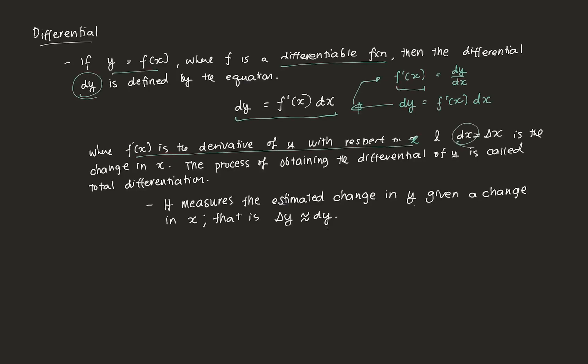Then dx is the change in x. The process of obtaining the differential of y is called total differentiation. The differential measures the estimated change in y — note, estimated — given a change in x, which is something incredibly important in economics. That is, delta y is approximately equal to dy, your differential.